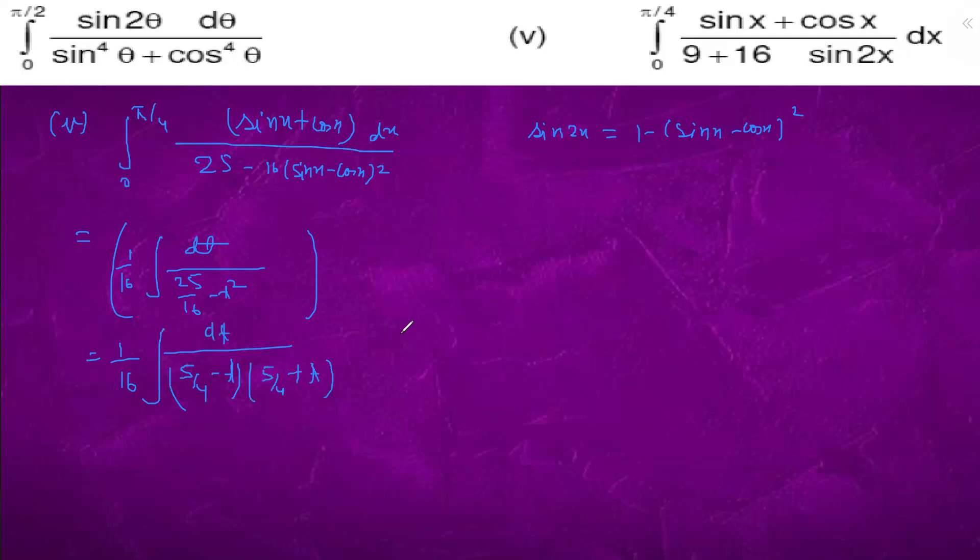This is dt integration. On making this on the sum of above, it will be 10 by 4. So we will divide by 10 by 4, multiply by 10 by 4, then it will come out to be dt upon 5 by 4 minus t plus dt upon 5 by 4 plus t. This is nothing but 1 by 40, ln of t plus 5 by 4 plus 5 by 4 and t minus 5 by 4.